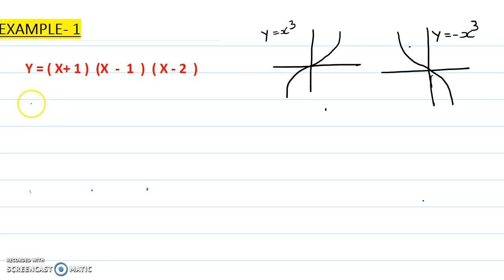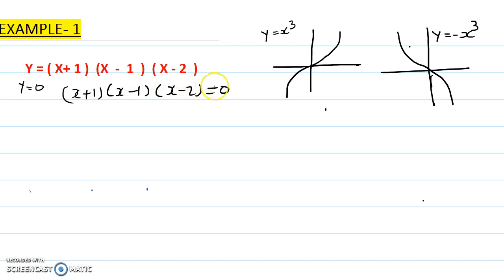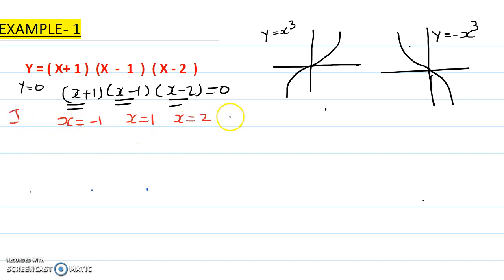This is Chapter 4 of the Excel book. For y = (x+1)(x-1)(x-2), if we put y = 0, then x+1 = 0, x-1 = 0, and x-2 = 0. Solving these gives x = -1, x = 1, and x = 2. This is your first step — these points are called critical points, or CP for short.